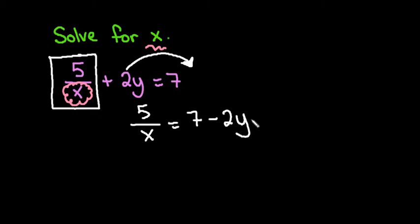You could have also written negative 2y plus 7 if you wanted the variable term first. It doesn't matter. That's an equivalent expression.